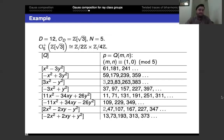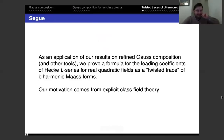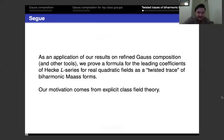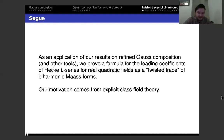Before I continue, are there any questions? Our results on refined Gauss composition and other tools will prove a formula for leading coefficients of Hecke L-series for real quadratic fields as a twisted trace of biharmonic Maass forms. I want to discuss the motivation for this. I talked about class field theory earlier — zooming out to a general number field, the same question: what are the finite abelian extensions of K? The answer is given by class field theory: they correspond to quotients of ray class groups.